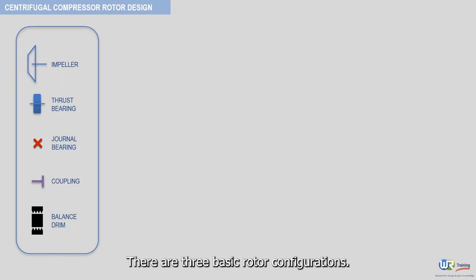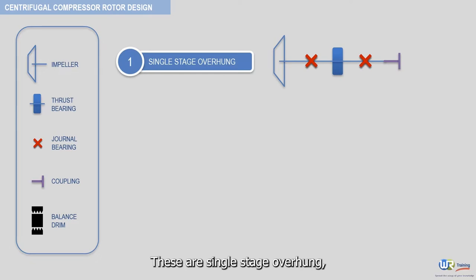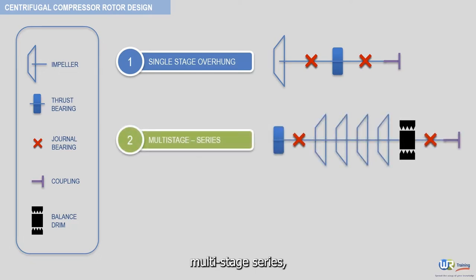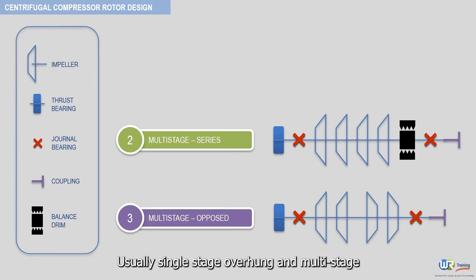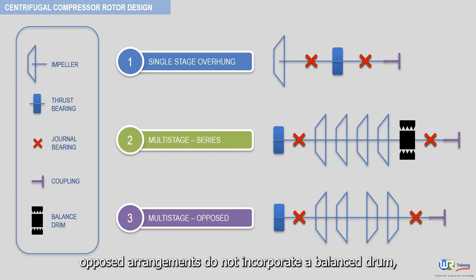There are three basic rotor configurations: single stage overhung, multi-stage series, and multi-stage opposed arrangements as depicted here. Usually, single stage overhung and multi-stage opposed arrangements do not incorporate a balance drum.